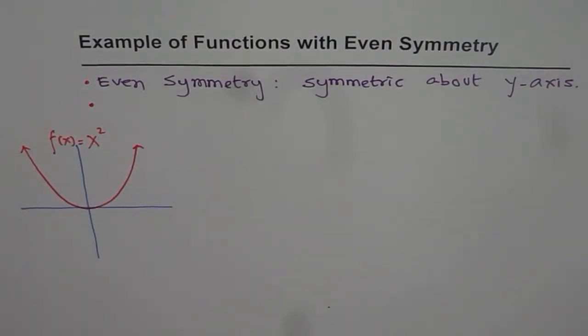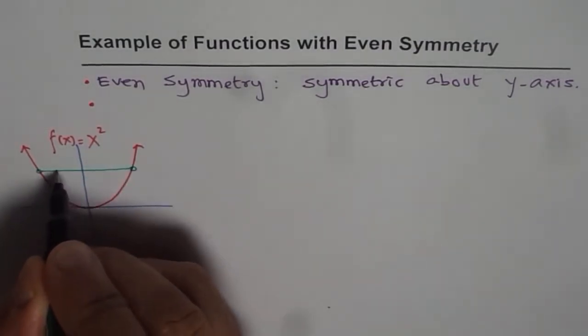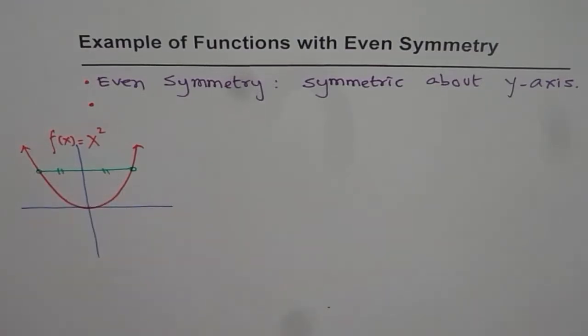It basically means that if we have one point here, then there will be a mirror image on the other side. So every point on the left side of the y-axis will have a mirror image on the other side. So that is how we say they have even symmetry.